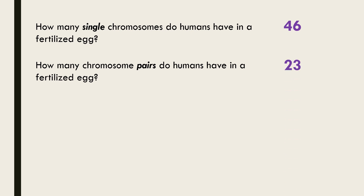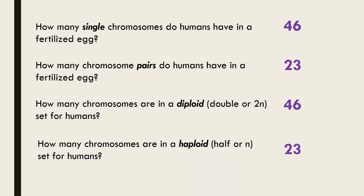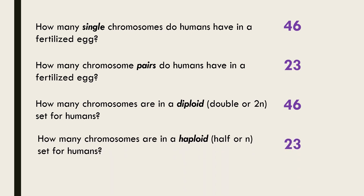So in summary, the diploid number of chromosomes for humans is 46 and the haploid number of chromosomes is 23. Thanks for listening. Hopefully this has helped you understand the difference between haploid and diploid a bit better. Feel free to post any questions below.